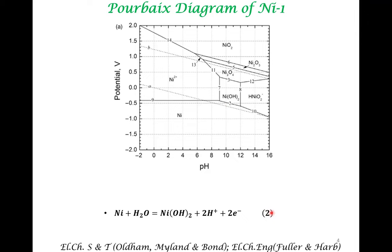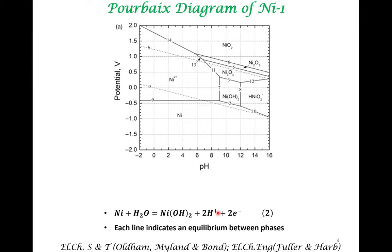Let's first look at a particular line. This number refers to a particular line, and a particular line indicates equilibrium between two different phases. Here, nickel and water are present on one side, and nickel hydroxide is present on the other side. Nickel can get converted to nickel hydroxide by reacting with water, producing two protons and two electrons. This line indicates the equilibrium between these reactants and these products — between these phases.